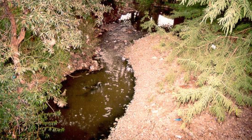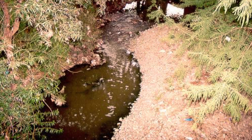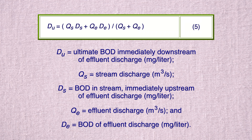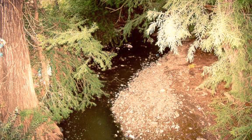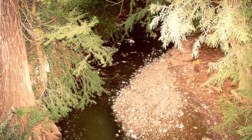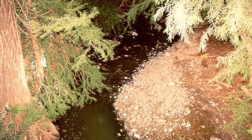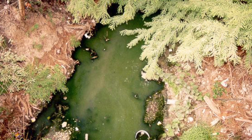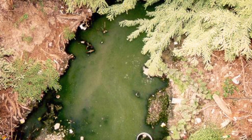At the upstream boundary, a mass balance leads to the boundary condition. Assuming the upstream flow is clean, d sub s is approximately equal to zero. Therefore, the mass balance reduces to a simplified expression.